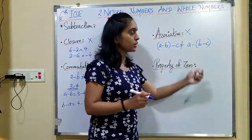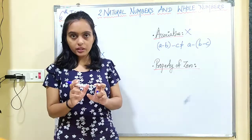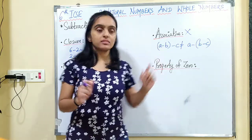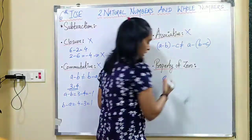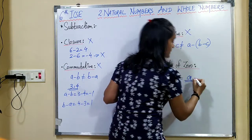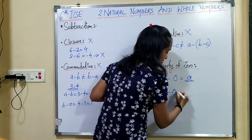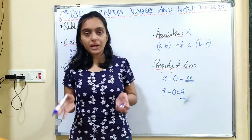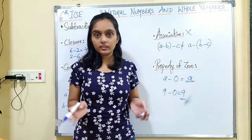Now, property of 0. For any whole number, if I am subtracting 0 from it, I will get the same answer. For example, if I have 9, then 9 minus 0 is again 9. So for subtraction of whole numbers, the property of identity holds — subtracting 0 from any whole number gives the same number.